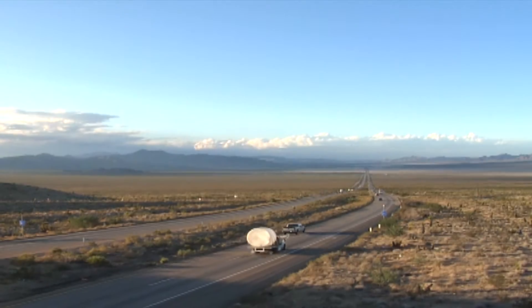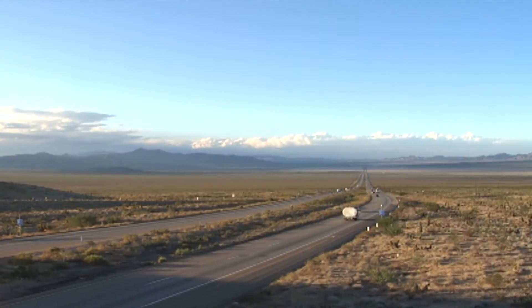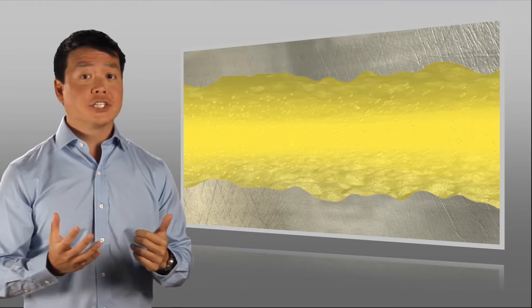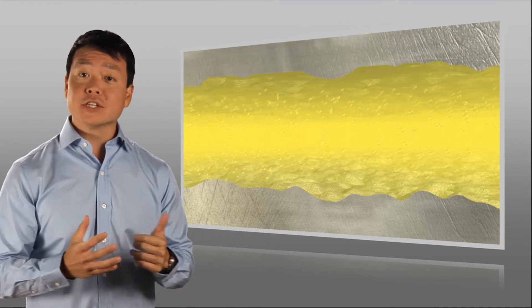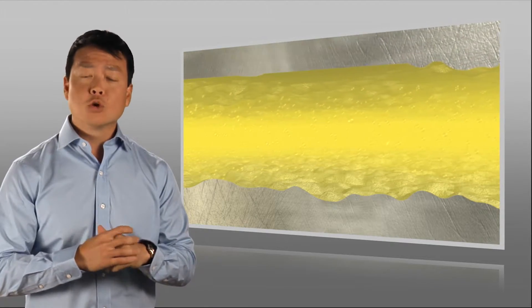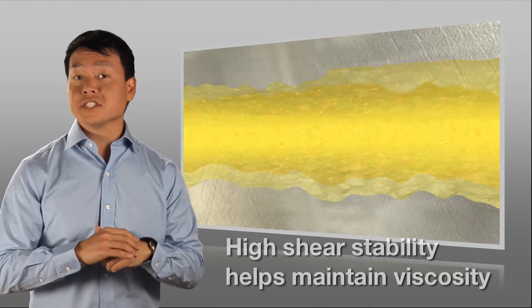Another benefit of viscosity modifiers is their ability to help oil maintain its viscosity or stay in grade. The action of metal surfaces sliding against the oil can try and shear the viscosity modifier molecules, reducing their size and reducing the oil viscosity.